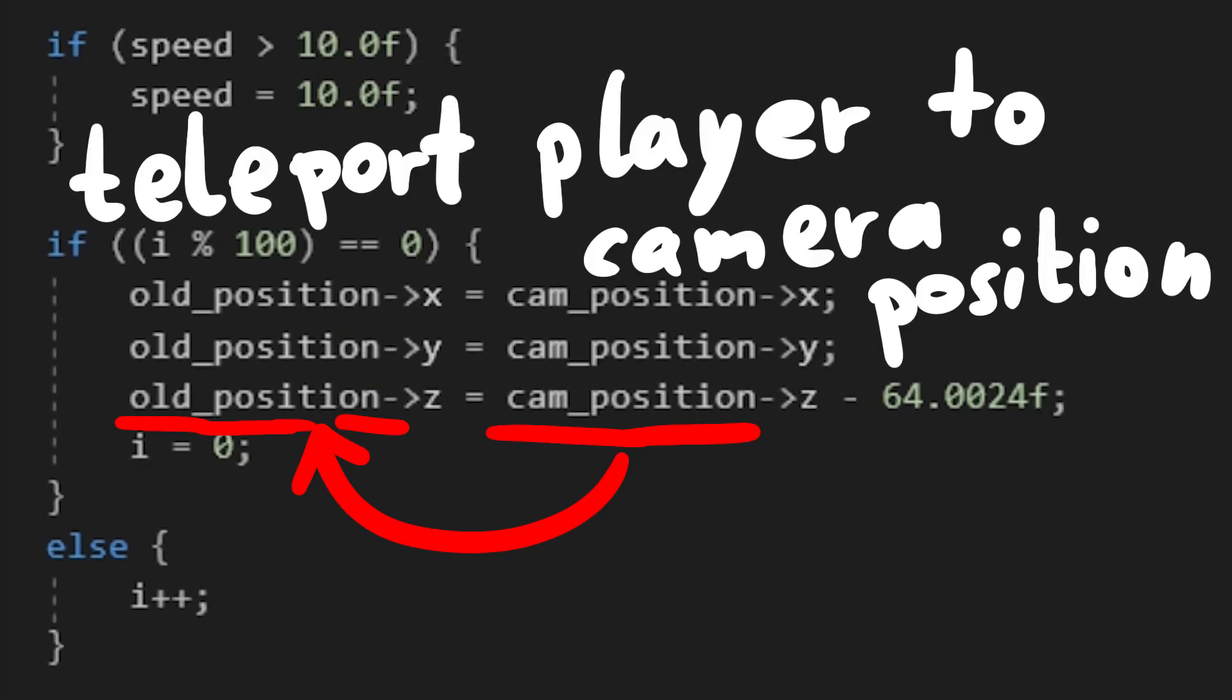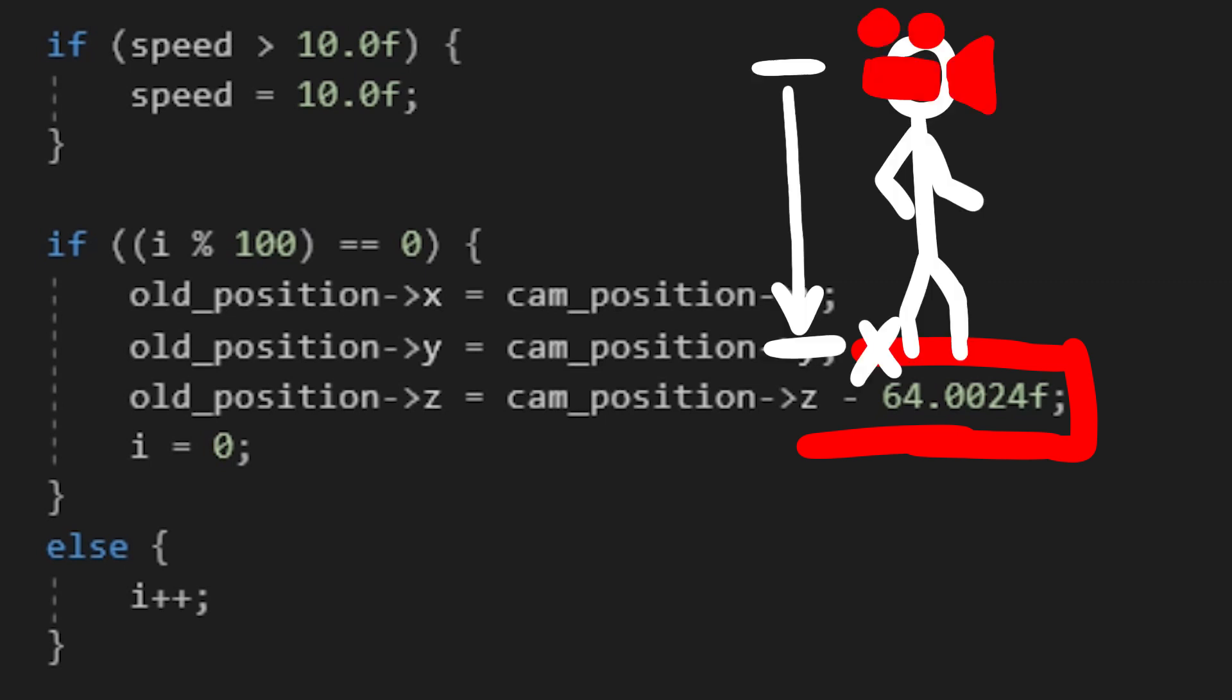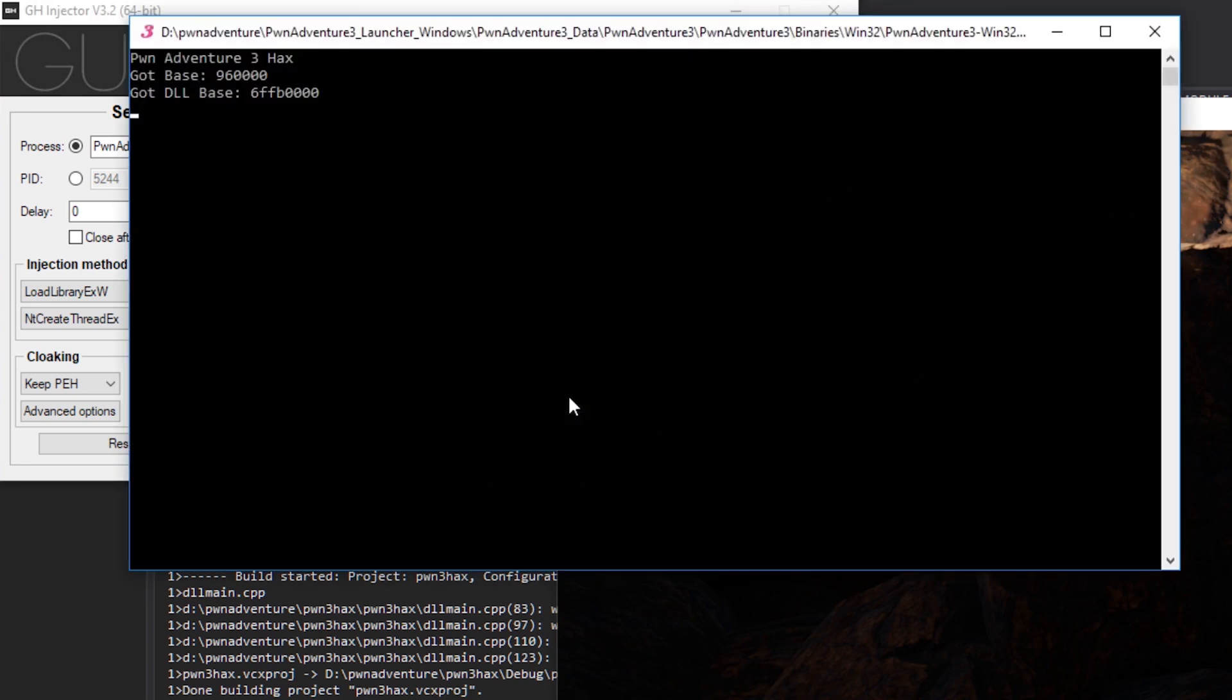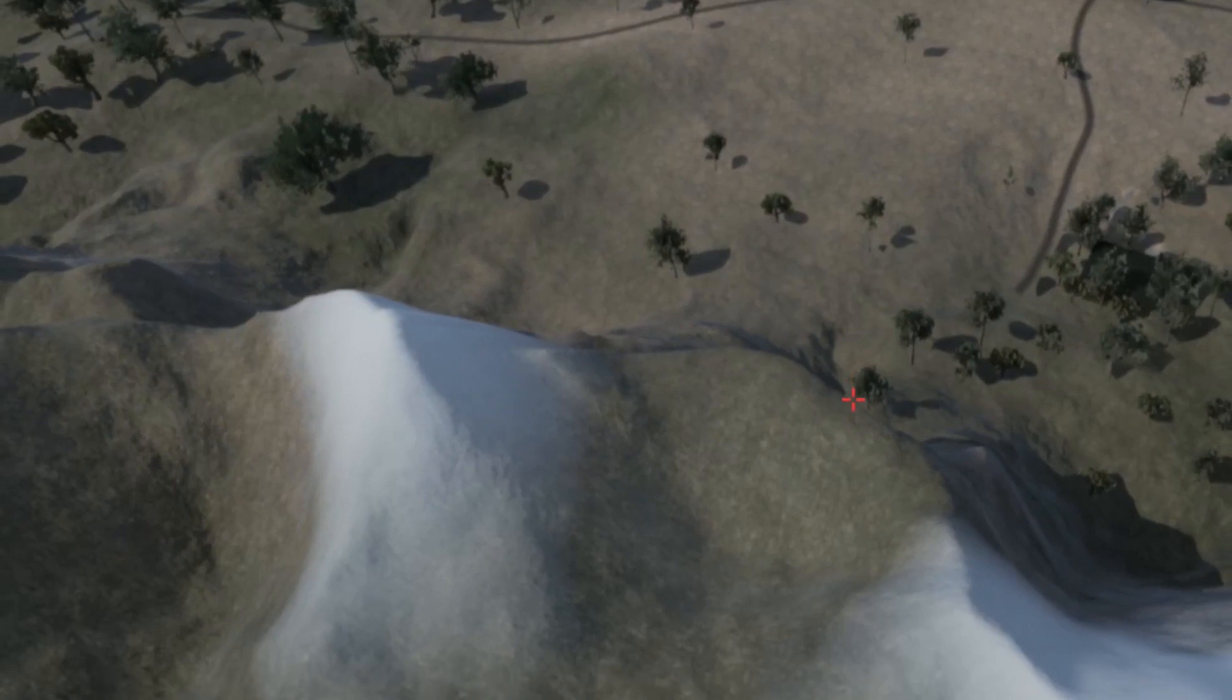Oh, and every 100 updates we also teleport the actual player position to our current camera position, but minus 64.002 float lower. Because the camera is on the head height, while the player position is calculated from the feet of the model. The distance I have measured by comparing the z coordinate from the player and the camera. Anyway, that's it. We can compile the DLL, inject into the game, enable flyhack and start flying. Isn't this awesome? No, just enjoy the sight, I'm a little bit proud of this.